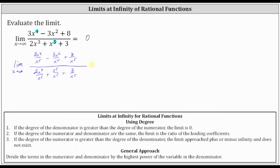Now we simplify each fraction. In the numerator, three x to the fourth divided by x to the fifth simplifies to three divided by x; minus three x squared divided by x to the fifth is equal to three divided by x cubed; and plus eight divided by x to the fifth doesn't simplify. In the denominator, two x cubed divided by x to the fifth is two divided by x squared; plus x to the fifth divided by itself simplifies to one; plus three divided by x to the fifth doesn't simplify.